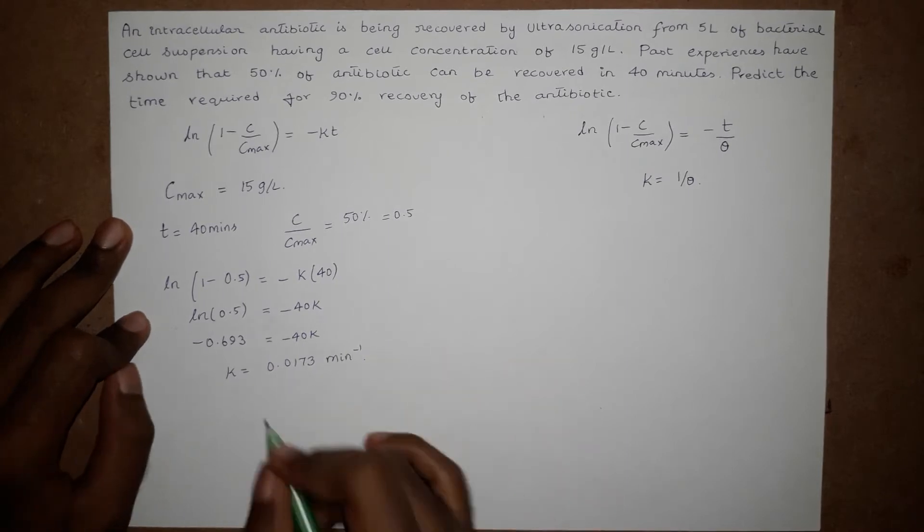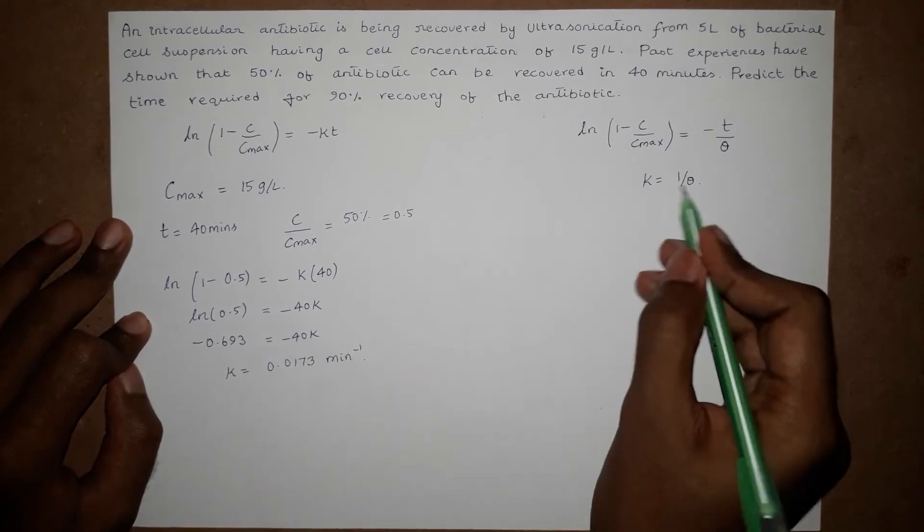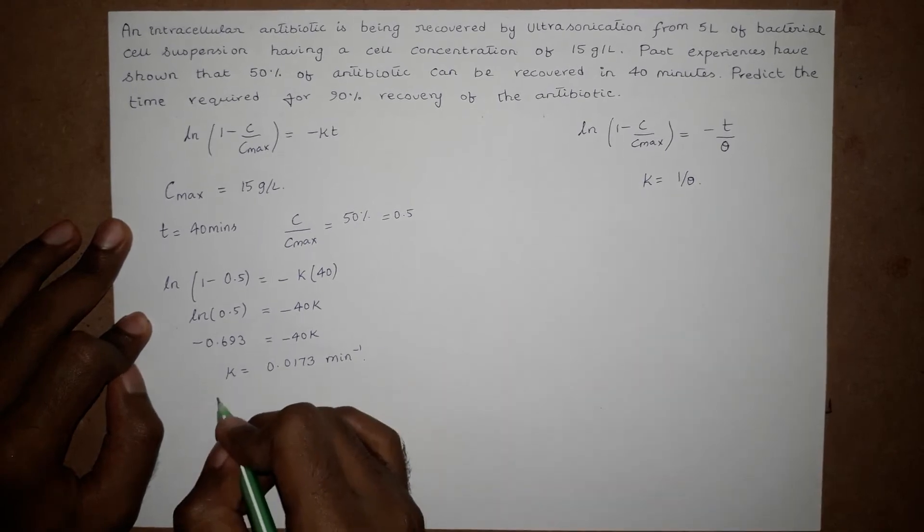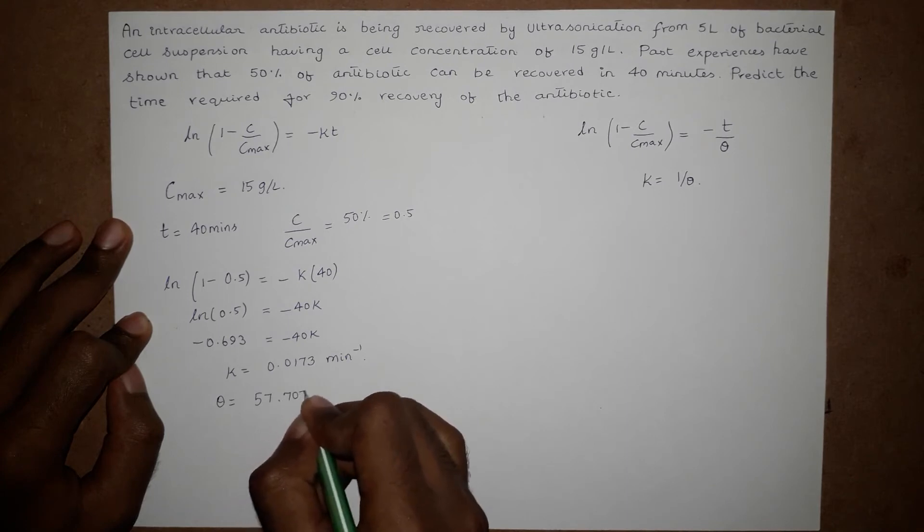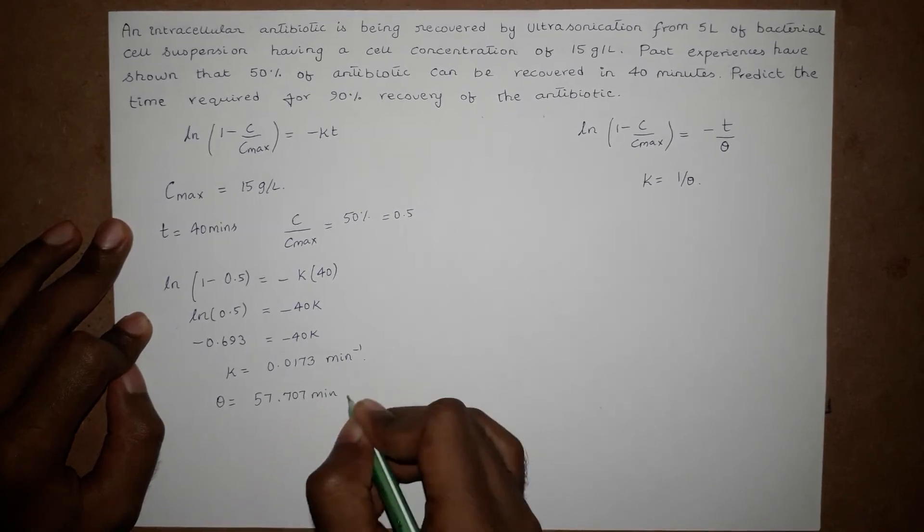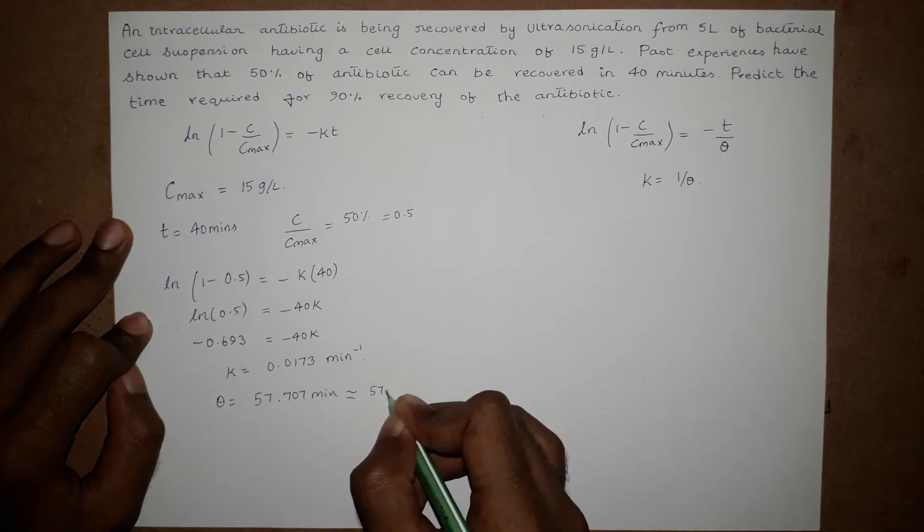Since K equals 1 over theta, we get the value of theta by taking the reciprocal of the found value, which came around 57.707 minutes, so approximately 57 minutes.